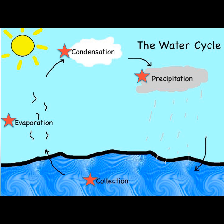Since there is only so much water in the world, we need to recycle it. The water moves around and around in this cycle. There are four parts to the water cycle: evaporation, condensation, precipitation, and collection.